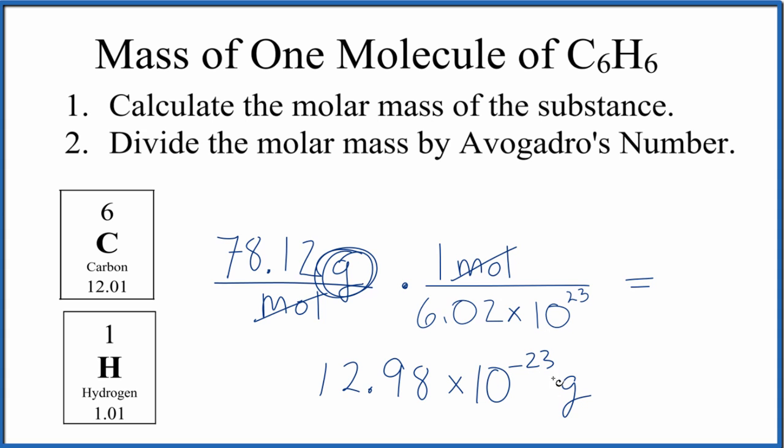It's a very small number, but molecules are very small. We could write this in scientific notation. We can move this over one, change this to negative 24. And this would be the same number, just in scientific notation. Let's round this to 1.30.